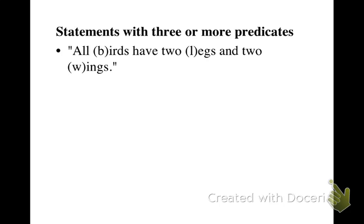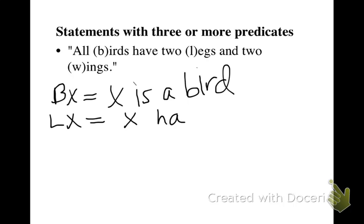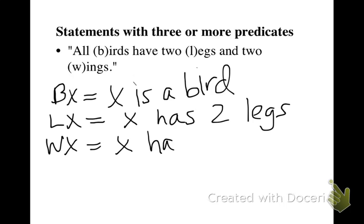Here we have the statement: all birds have two legs and two wings. So we have the predicates: Bx, which is 'x is a bird'; Lx, which is 'x has two legs'; and Wx, which is 'x has two wings.' What we have to pay attention to is which of these predicates go in the subject and which are things being said about the subject. In this case, the subject is birds — Bx, 'x is a bird.'